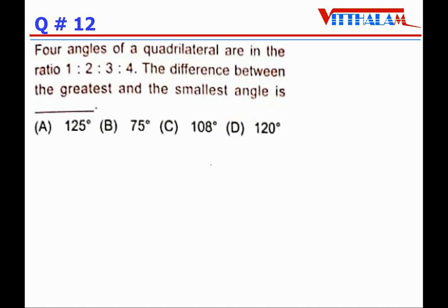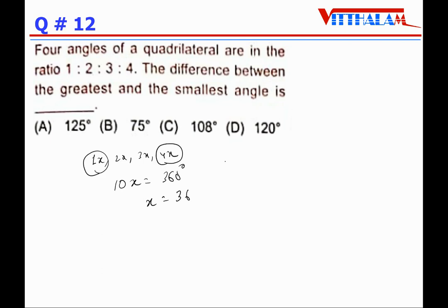Four angles of a quadrilateral are in the ratio 1:2:3:4. The difference between the greatest and smallest angles: the sum of angles is 360°. Let angles be x, 2x, 3x, 4x, so 10x = 360°, giving x = 36°. The difference between greatest (4x) and smallest (x) is 3x = 3 × 36° = 108°. Answer is C.